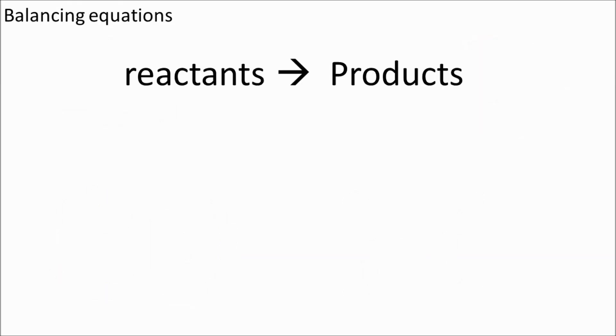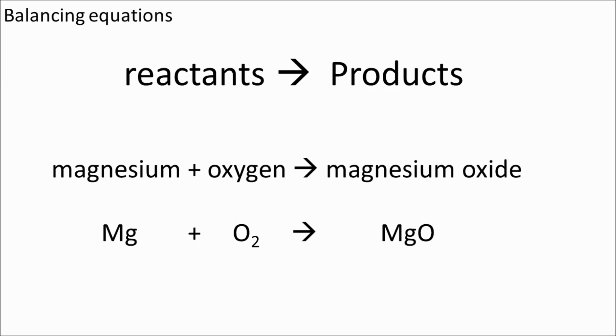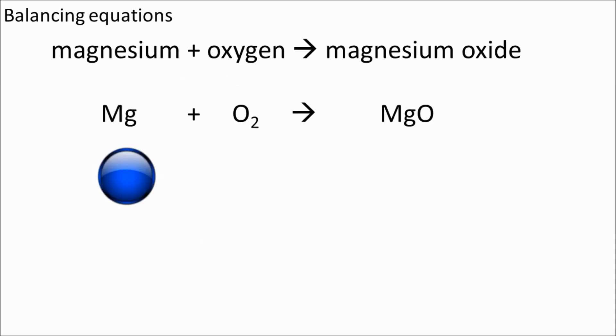Let's move on to balancing equations. On the left-hand side we have reactants, on the right-hand side we have the products. The reactants turn into the products, and if you know anything about conservation of mass, you know that the reactants will have the same mass as the products. So we've got a chemical reaction here: magnesium plus oxygen goes to magnesium oxide. We've got the word equation and we've got the symbol equation.